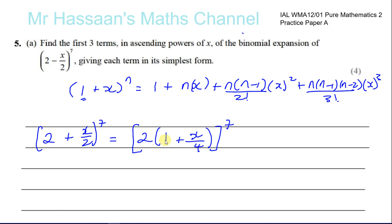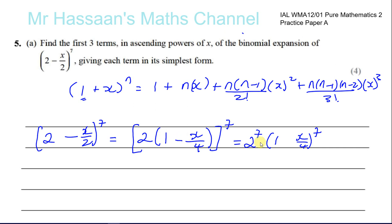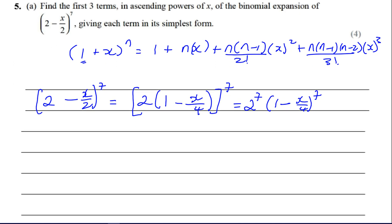This is actually the same as that. If you expand, you get 2 plus 2x over 4, which is x over 2, all to the power of 7. So I can separate this as 2 to the power of 7 times (1 plus x over 4) to the power of 7. Wait — there's a minus here and I wrote a plus. That would have made the whole thing wrong. So it's a minus, and that's a minus, and that's a minus. Be very careful — it's very easy to make a silly mistake like that, which costs marks.